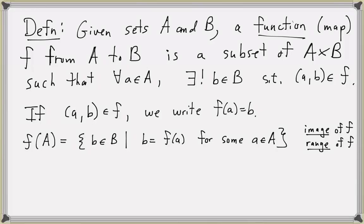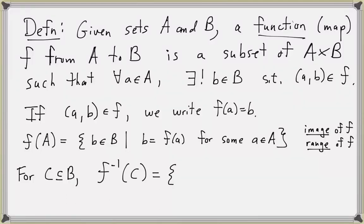These are all the possible second coordinates of every ordered pair in the set F. Now given a subset C of B, we can define what we call the pre-image of C under F. The notation looks like F inverse of C, but C is a set. We define this to be the set of all elements a in set A such that F of a is actually an element of set C. This is called the pre-image of C under F.